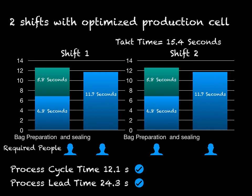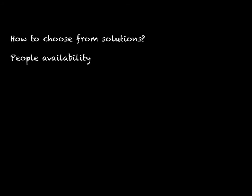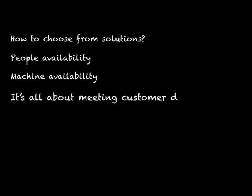So how do you choose the best solution? There are many factors that may affect the decision. Think of available people — if you don't have four people on a single shift, the first solution would not be possible. Also think of machine availability — if the bag fill machine was not available, adding a second bag filler or a second production cell would not be a possible solution. Remember, after all, it's all about meeting customer demand. It's about keeping it lean.